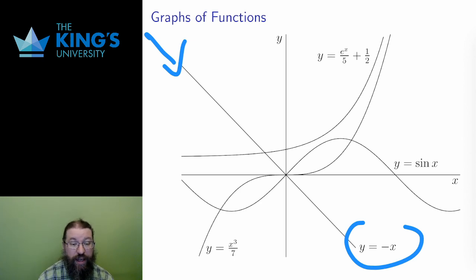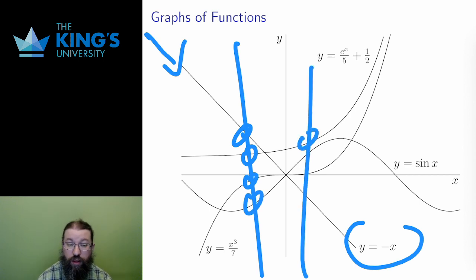Since each x value only leads to one output of a function, you can recognize graphs of functions by what is called a vertical line test. This means that any vertical line can only cross the graph of a function at most once. You will see in the diagram here that any vertical line I draw will only cross each function once, no matter where I draw that vertical line.